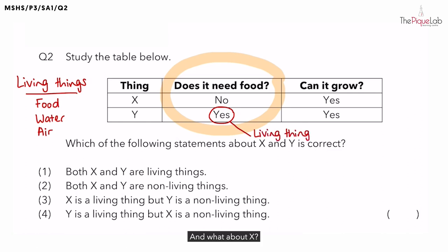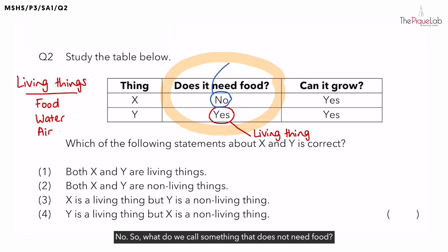And what about X? If X does not need food, can we call it a living thing? No. So, what do we call something that does not need food? We call it a non-living thing.